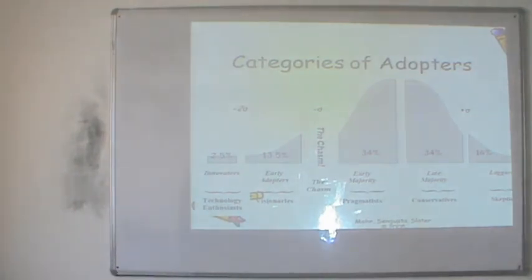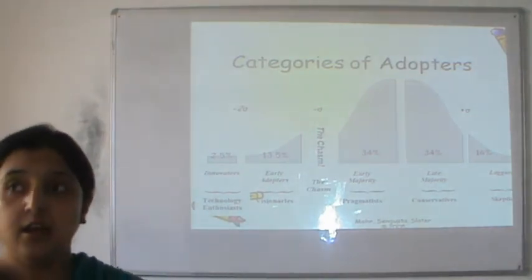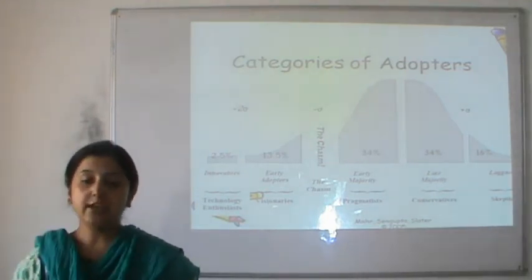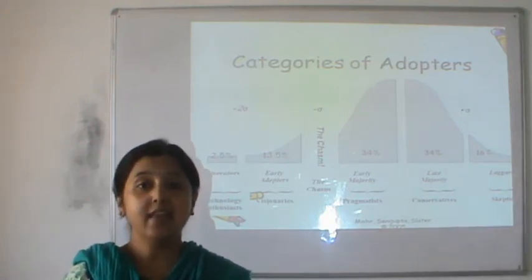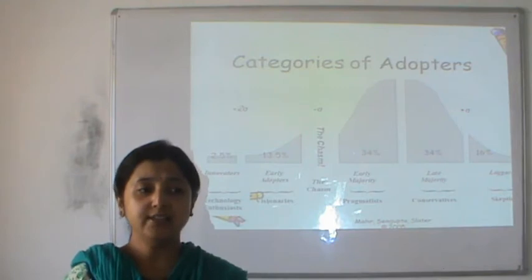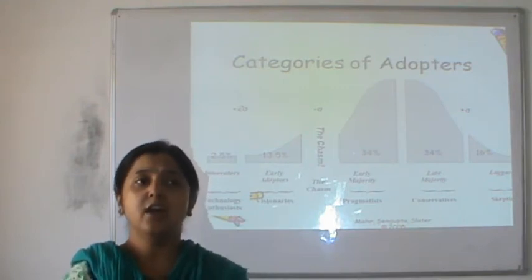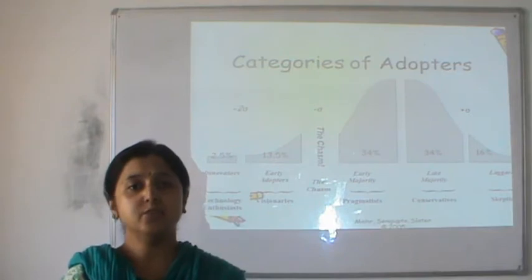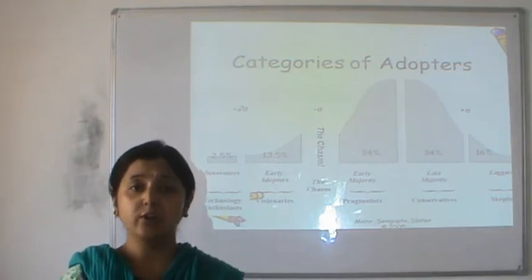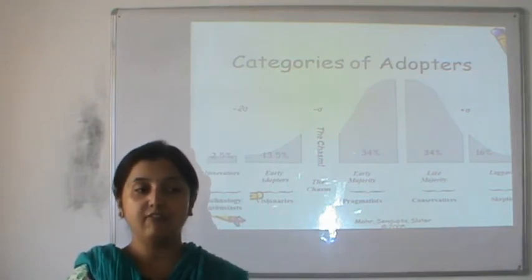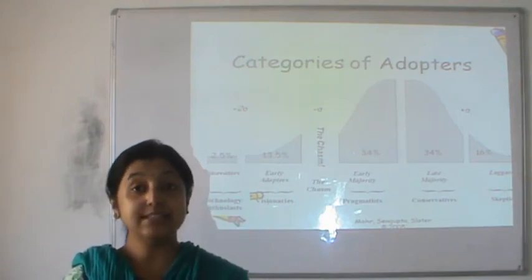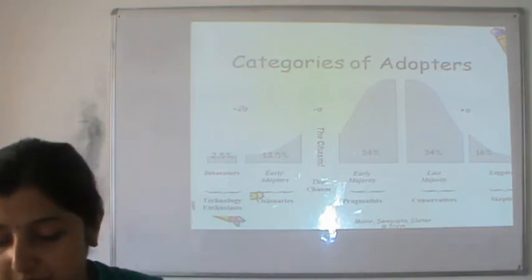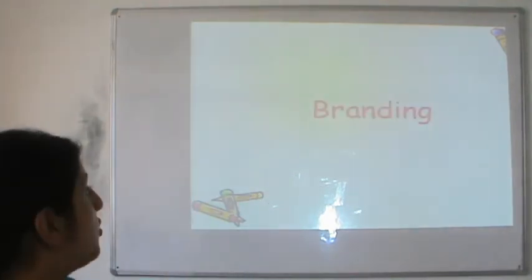One of the most important aspects of a product is the way it is known in the market — that is where branding decisions come in. None of us today go to the market and buy a toothpaste generically; everybody buys a Close-Up or a Colgate or whatever they prefer. Nobody buys a pen — they are clear they want a Mont Blanc, a Sello, a Montex, or a Parker. This is where the brand race comes in — it's the name game. The second part of this discussion will cover branding decisions.